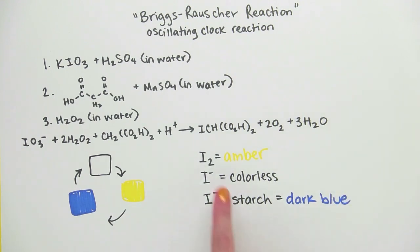Triiodide is formed when iodine and iodide interact. And this cycle continues until all the reactants are used up.